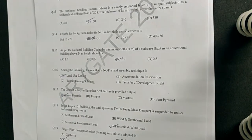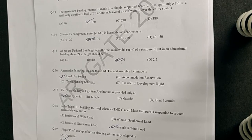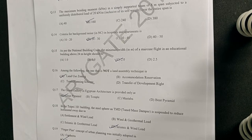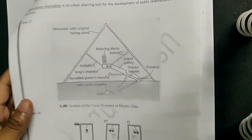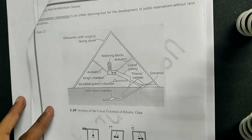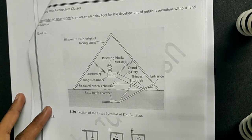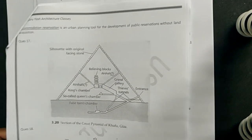The next question: the grand gallery in Egyptian architecture is provided in which structure? The answer is obviously the great pyramid. I have provided a typical section of the pyramid in the notes, which you can refer to for more knowledge.